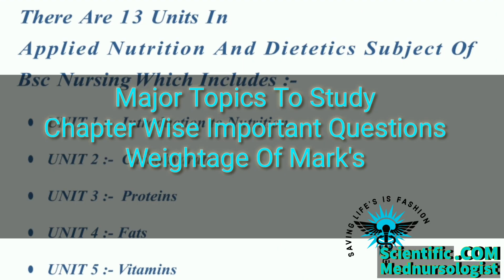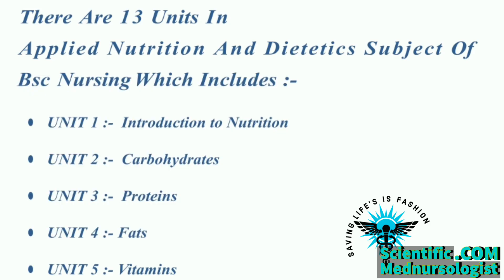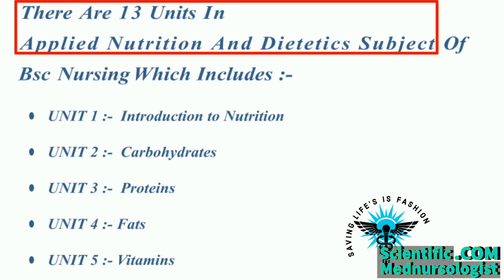First, to get a brief idea about major topics to study, chapter-wise important questions, and weightage of marks per unit of the syllabus — with this syllabus and blueprint, you will easily understand the important questions briefly. There are 13 units in applied nutrition and dietetics subjects.